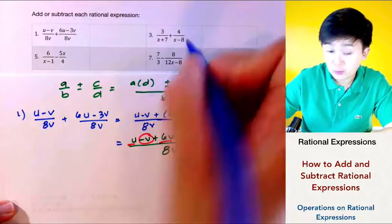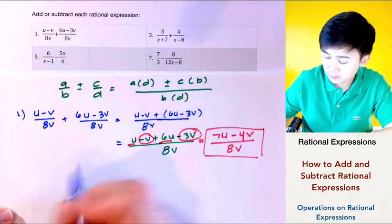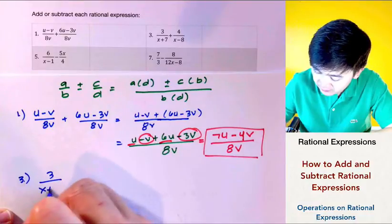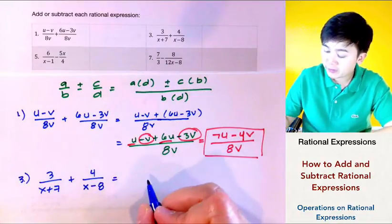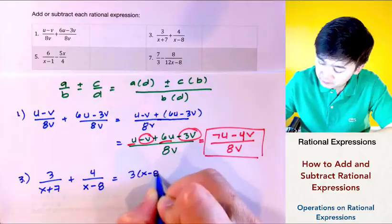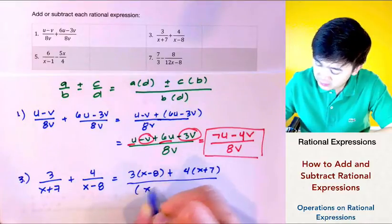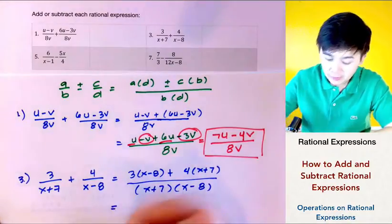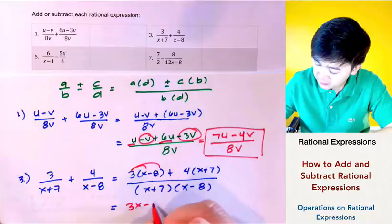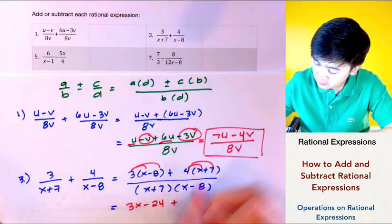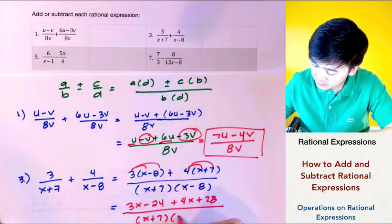For problem number two, notice that the denominators are different, so we're going to use the formula. We have 3 over X plus 7, plus 4 over X minus 8. By using the formula, we multiply 3 times X minus 8, plus 4 times X plus 7, all over X plus 7 times X minus 8. Simplifying the numerator gives us 3X minus 24 plus 4X plus 28, all over X plus 7 times X minus 8.